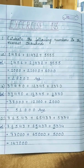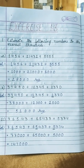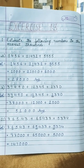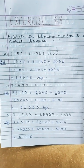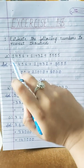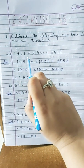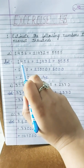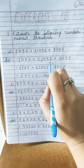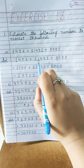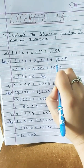Part A is 1456 plus 21432 plus 5555. Rounding off to the nearest thousand, I have underlined the digit at the thousands place. In 1456, I have underlined 1. In 21432, I have underlined 1. In 5555, I have underlined the 5.